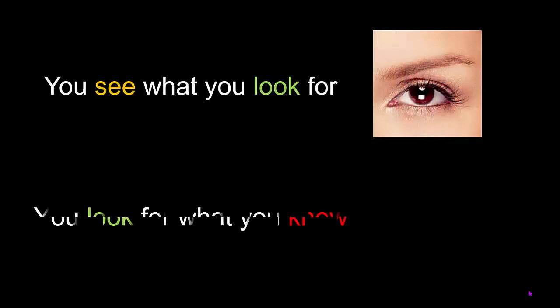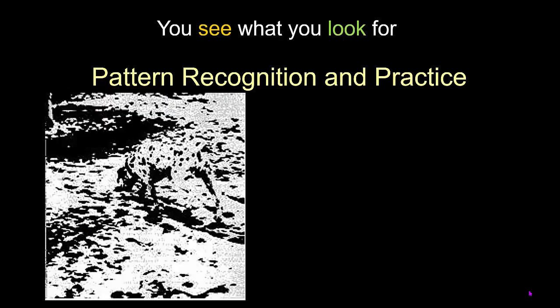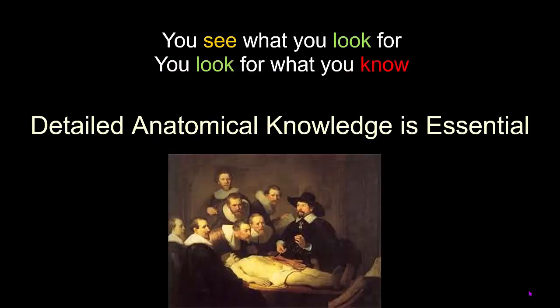One of the key things to realize when using ultrasound is that you only see things that you look for, and that you will only be looking for things that you know should be there. Ultrasound interpretation is therefore all about pattern recognition. You may not see the dog in this picture the first time, but once it is pointed out to you, you will always be able to identify it. Detailed anatomical knowledge is therefore essential to interpretation of sonoanatomy.